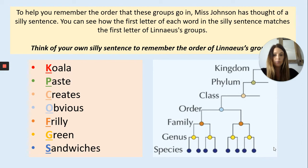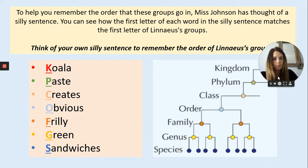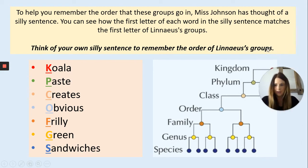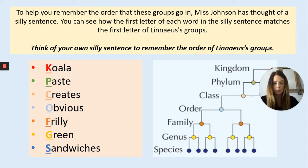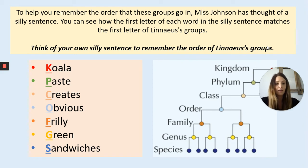You need to come up with a way to remember these. Miss Johnson's way is: 'Koala paste creates obvious frilly green sandwiches.' Mine is: 'Katy Perry can often fill ginormous stadiums.' I'd like you to have a go at coming up with your own silly sentence to remember the order of this classification system. Pause the video now and have a go.